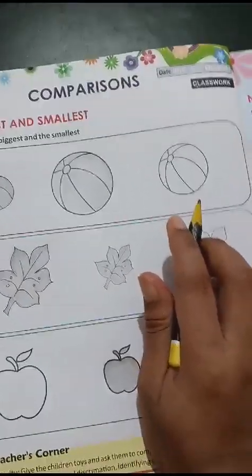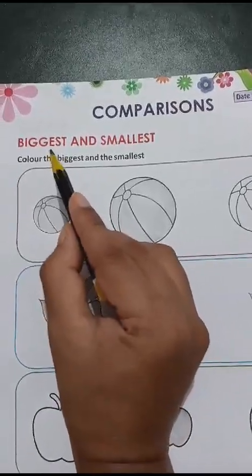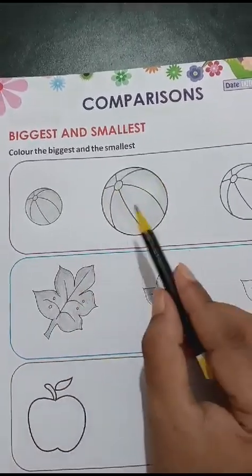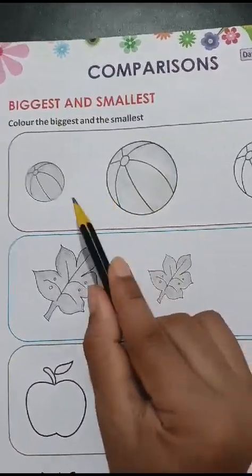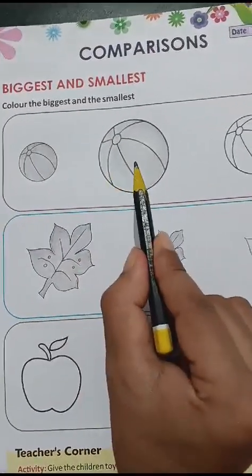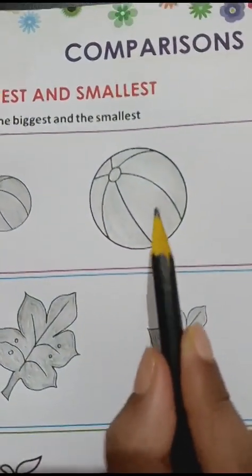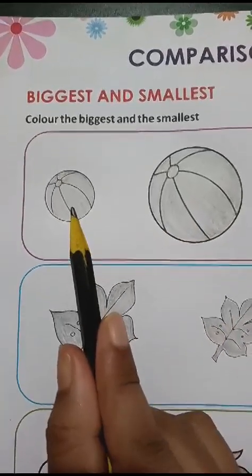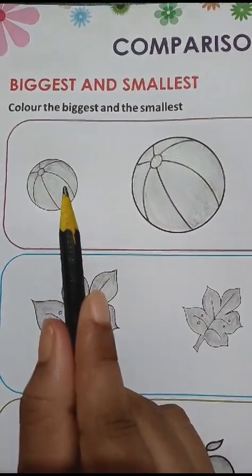तो यहां पर biggest and smallest में colour करो या फिर pencil shade कर सकते हो. तो तीनों में कौन सा बड़ा यानि की biggest ball है? यह वाला ball. इसलिए मैं इसको pencil shade किया. और smallest है यह वाला. इसलिए इसको मैं pencil shade किया.